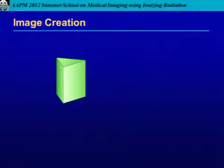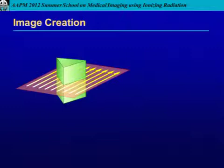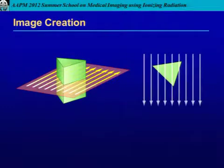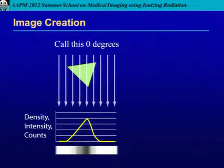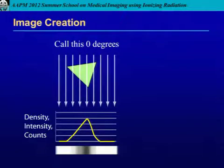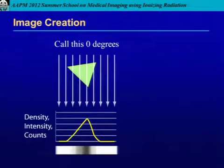What I'm going to walk through next is a graphical illustration of how it's possible to create a cross-sectional image just by looking at an object from different angles. We have a simple three-dimensional triangle, and we shoot X-rays through it. Viewed from the top, we start at zero degrees — we get a measurement of transmission or intensity, which we can display as a plot or convert into a grayscale. The width of the grayscale is just arbitrary, sized so you can see it from the back.